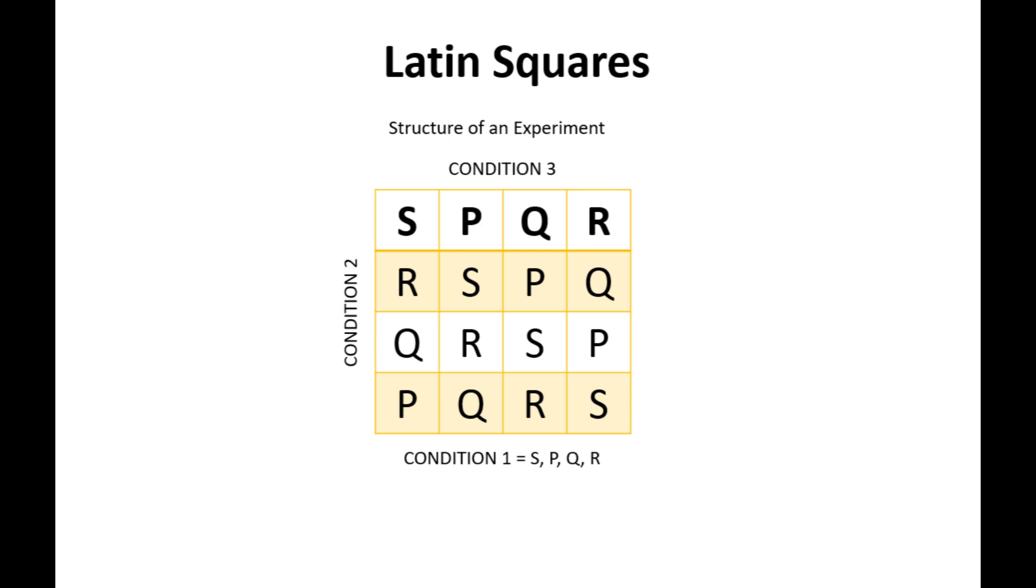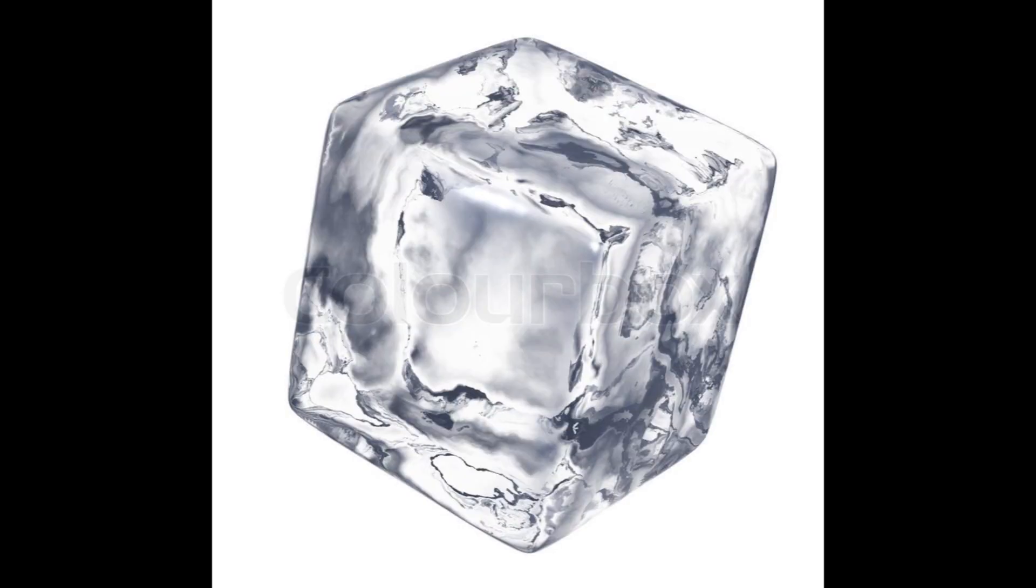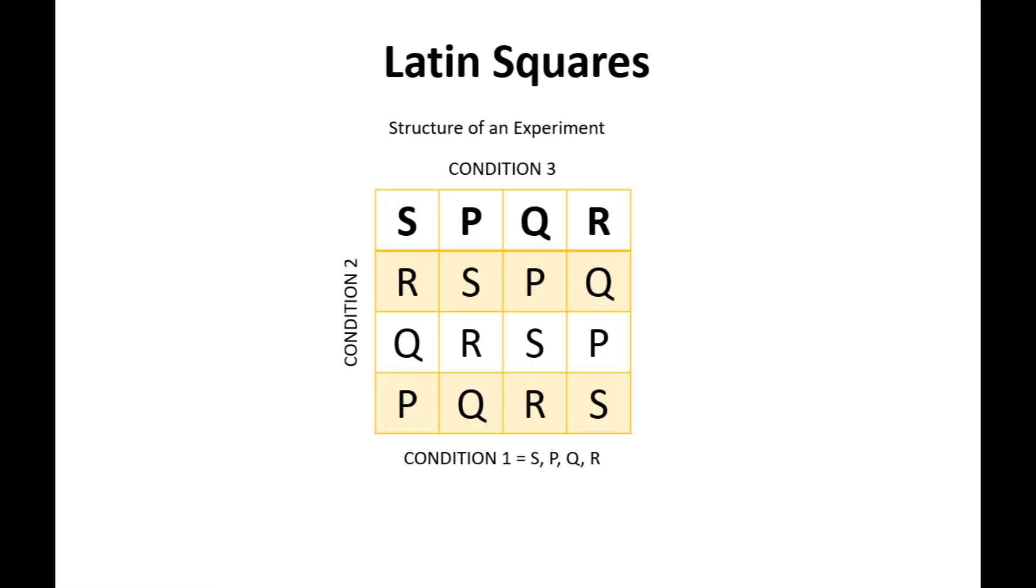It is also definitely worth mentioning how all the factors are squared in the sense that the types of each condition are equal to the amount of types of the other two conditions.